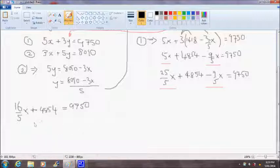This gives us the opportunity now to solve directly for x. So if we subtract 4854 from both sides of the equation, we'll end up with 16/5x is equal to 9750 minus 4854, which works out to be 4896.